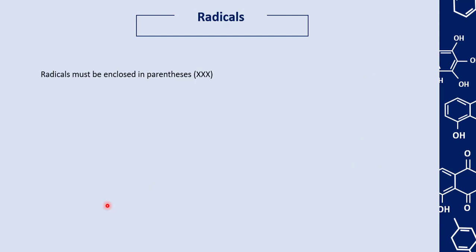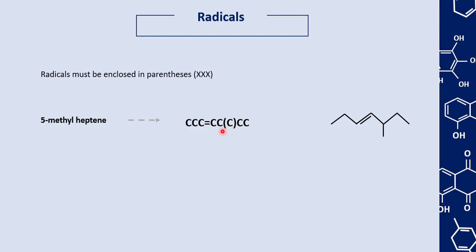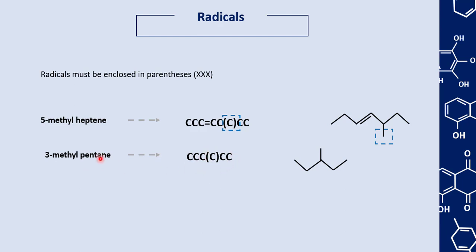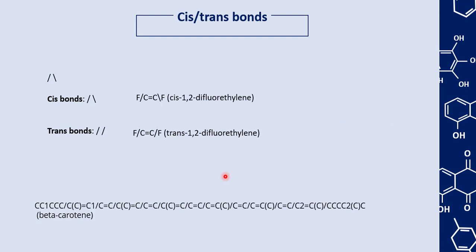We can also represent radicals using parentheses. For example, here we have 5-methylheptane, which means a molecule of 7 carbons with a methyl radical at position 5 — to represent this radical we enclose it in parentheses. We also have 3-methylpentane, which has a primary chain of 5 carbons with a methyl radical at position 3, also enclosed in parentheses.